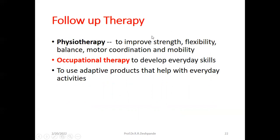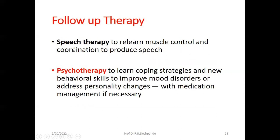I would like to tell you that there are very interesting videos I have uploaded regarding the nervous system examination — please don't miss those 3 or 4 videos. Occupational therapy helps develop everyday skills and use of adaptive products. Speech therapy helps relearn muscle control to produce speech. Psychotherapy helps with coping strategies, new behavioral skills, mood disorders, and personality changes, with medication management if necessary.